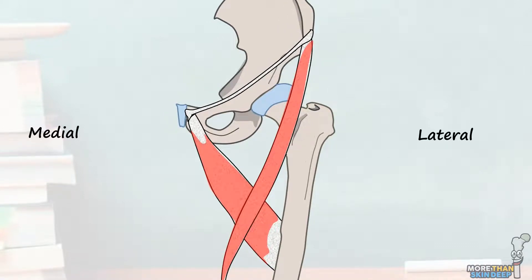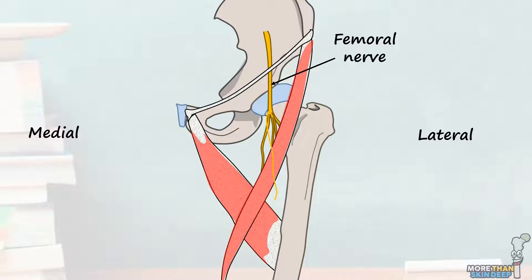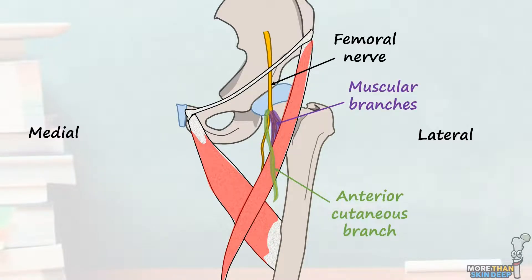Now, even more important than the borders of the femoral triangle are its contents. We're going to consider them from lateral to medial. The most lateral structure in the femoral triangle is the femoral nerve. This runs down the outer part of the femoral triangle and splits into three parts towards its bottom: the anterior cutaneous branches, which supply skin; the muscular branches, which supply muscles in the anterior and medial thigh; and the saphenous nerve.